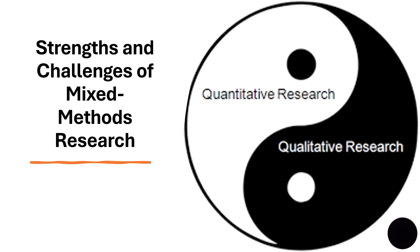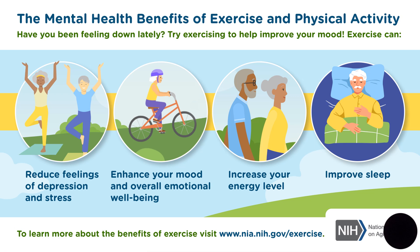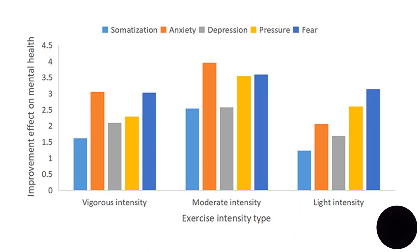Take the example of a study examining the impact of exercise on mental health. A mixed methods research approach would allow for a comprehensive look at the issue from different angles. Researchers could begin by collecting quantitative data through surveys to get an overall view of the participants' levels of physical activity and mental health, and qualitative interviews would follow to explore the underlying dynamics.